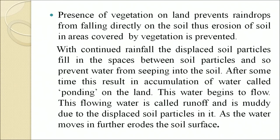With continued rainfall, displaced soil particles fill the spaces between soil particles and prevent water from seeping into the soil. This results in accumulation of water called ponding on the land. This water begins to flow and is called runoff, which is muddy due to displaced soil particles in it. As the water moves, it further erodes the soil surface.